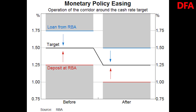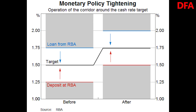The operation of the interest rate corridor means that there is no need for the RBA to adjust the supply of ES balances to bring about a change in the cash rate. For example, when the RBA lowered the cash rate target by 25 basis points from 1.5% to 1.25% in early June, the rates associated with the corridor also moved lower to be 1% on overnight deposits and 1.5% on overnight loans, down from 1.25% and 1.75%. A bank that would have previously required a return above 1.25% to lend ES balances in the cash market is, under the new corridor, willing to lend at a lower return, and so a bank wanting to borrow cash pays a lower rate than before.